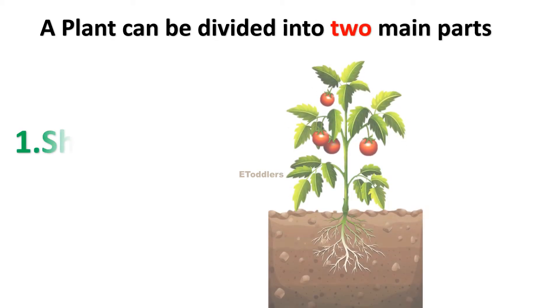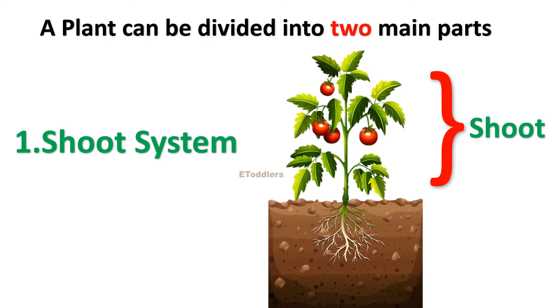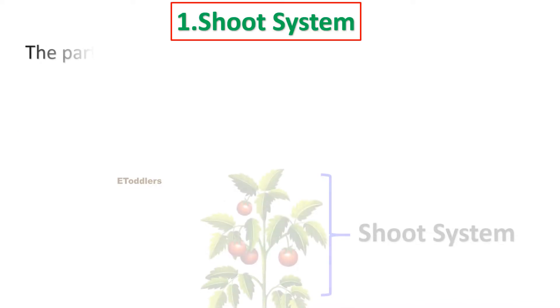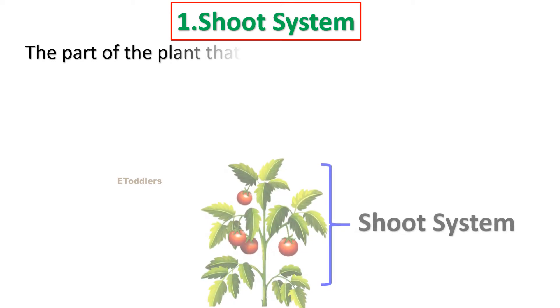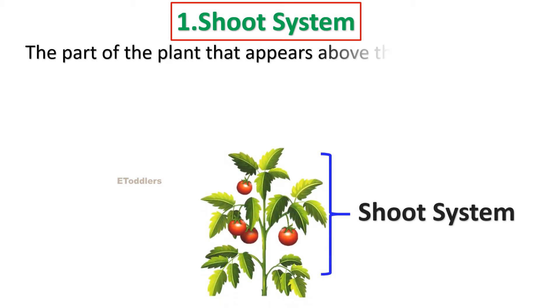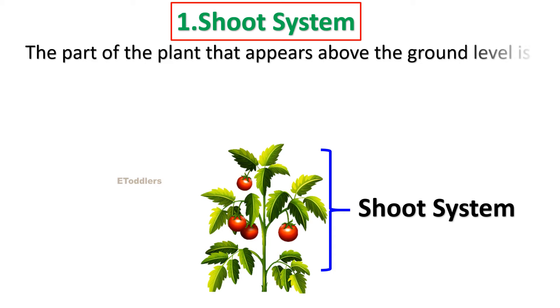A plant can be divided into two main parts: shoot system and root system. The part of the plant that appears above the ground level is called the shoot system.